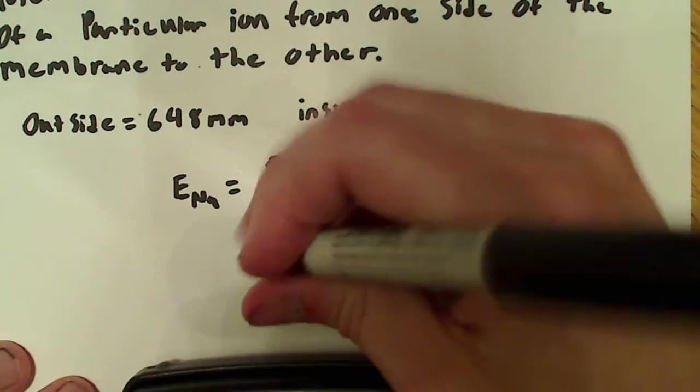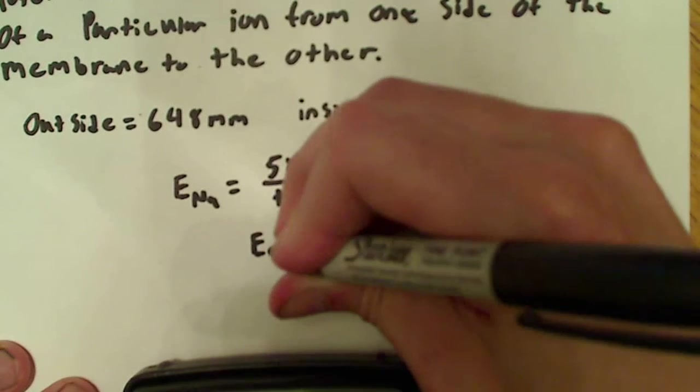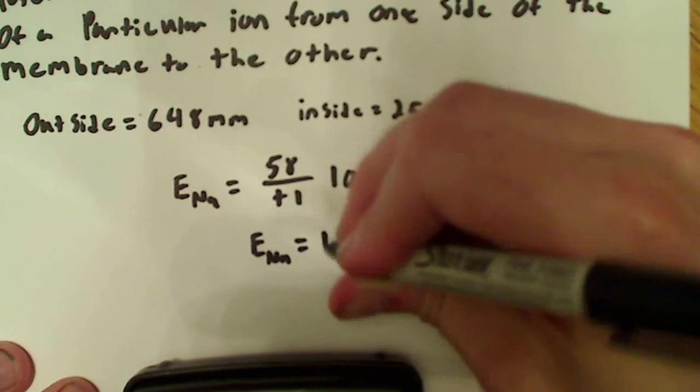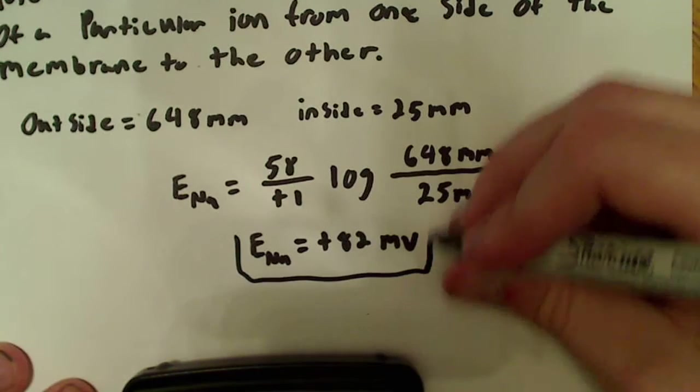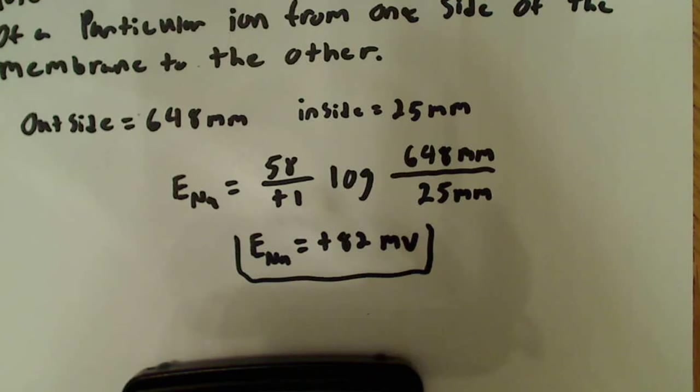Plus 82 millivolts, okay? So, the equilibrium potential for Na is equal to plus 82 millivolts. And that would be your answer for the first part of the question.